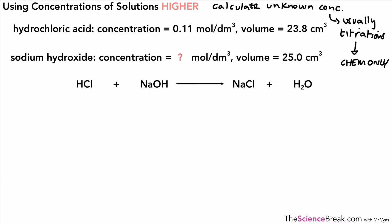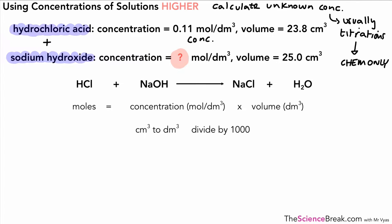Let's take a look at our first example for working out an unknown concentration: hydrochloric acid reacting with sodium hydroxide. The concentration of hydrochloric acid is 0.11 moles per decimetre cubed and the volume is 23.8 cm³. For sodium hydroxide we have an unknown concentration and a volume of 25 cm³. We need two key things: the equation moles = concentration × volume, and the conversion that to convert cm³ to dm³ we divide by 1000. We also need a balanced formula equation.